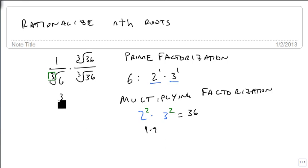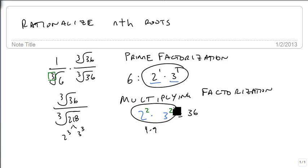This gives me the cube root of 36 over the cube root of 216. But 216 is 2 cubed times 3 cubed. And I know that because it's this times this. And so that means I'm going to get a single copy out of the 2 and the 3 so that I get the cube root of 36 over 2 times 3, which is the cube root of 36 over 6. And that's my answer. And I've rationalized the radical out of the denominator.